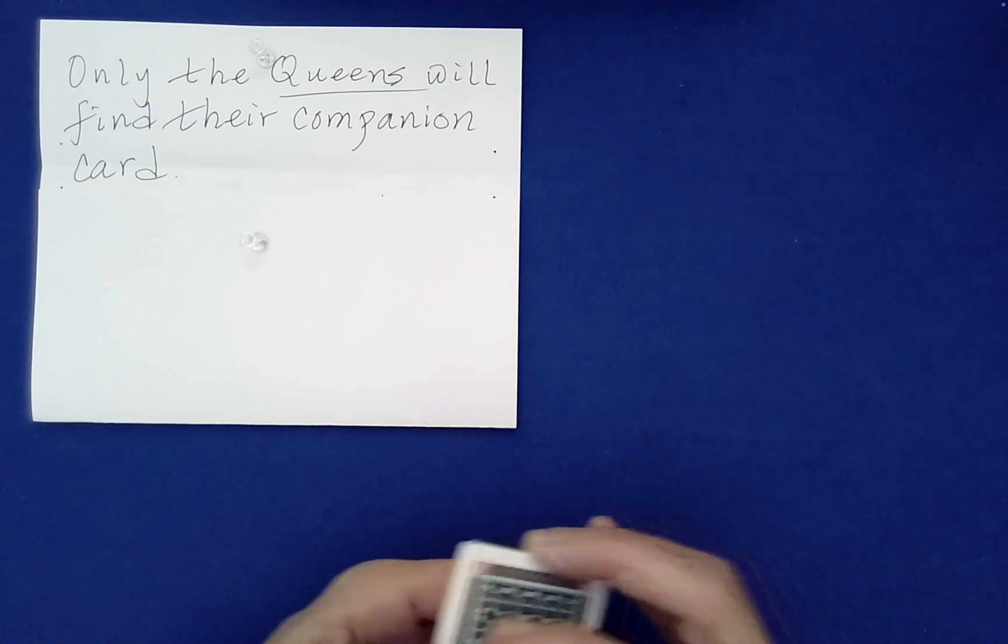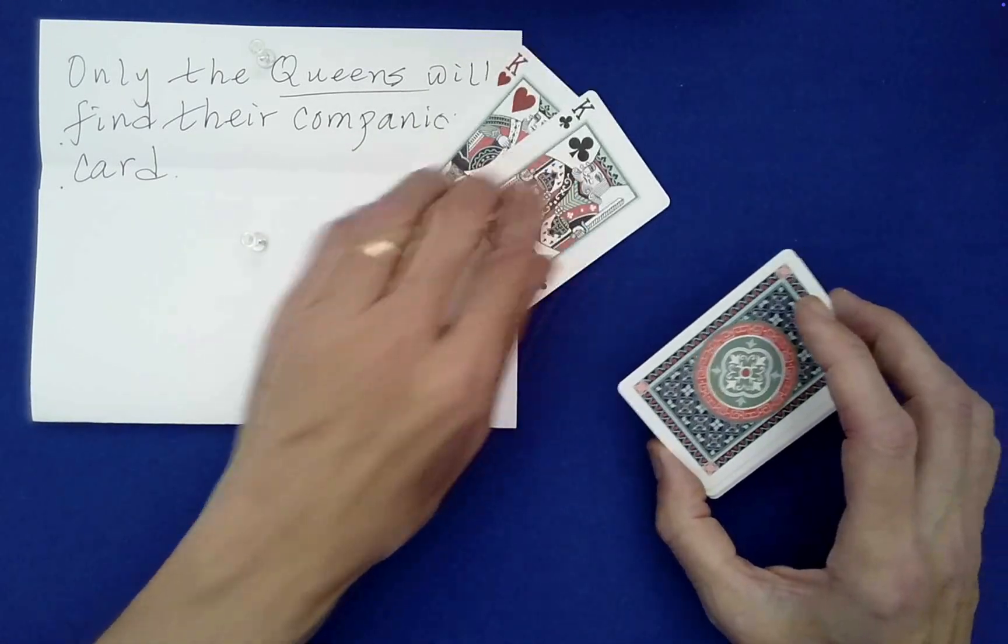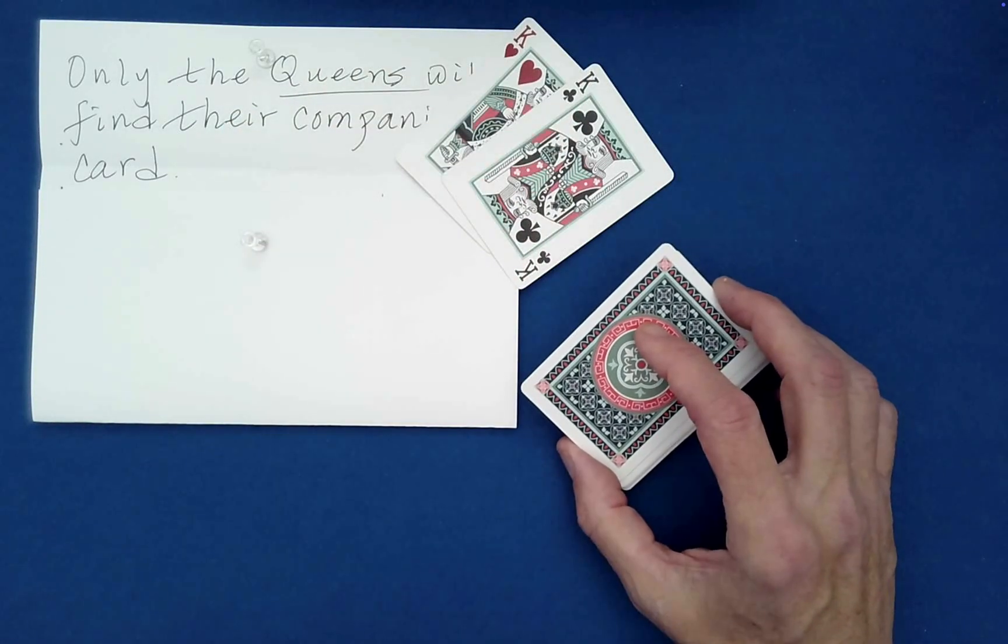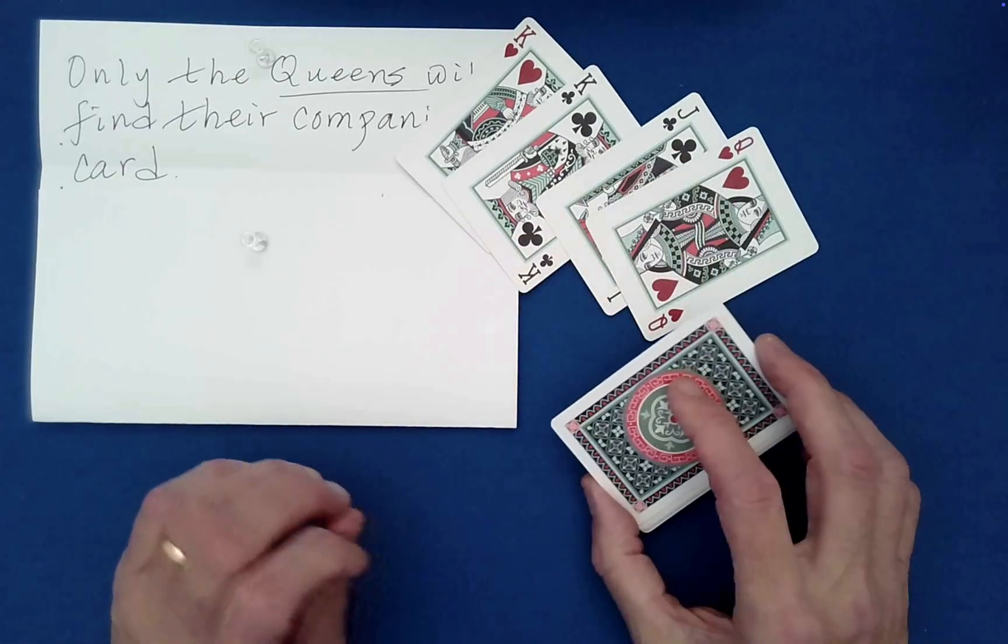Well, companion cards are cards of the same value in the same color. Okay, so let's see if that's true here. Let's check. Well, the kings didn't find each other, they're supposed to both be red or black.